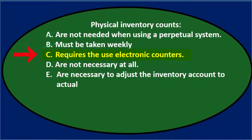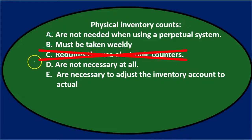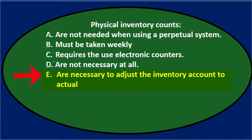C implies that a physical inventory couldn't be done just by counting items and marking that off. Electronic counters might be needed in some types of counts, but it is possible to do a traditional physical count as well. So that's not it. D, are not necessary at all — that's clearly not true. A physical count is going to be one of our major internal controls for inventory. So through the process of elimination, we've got E.